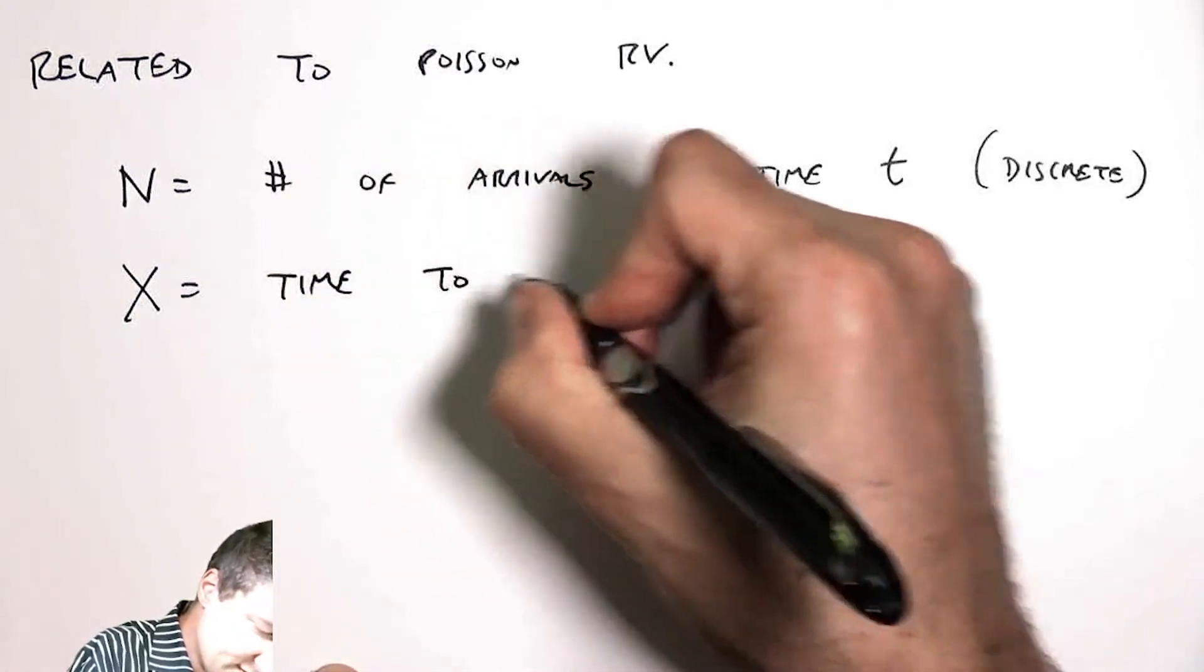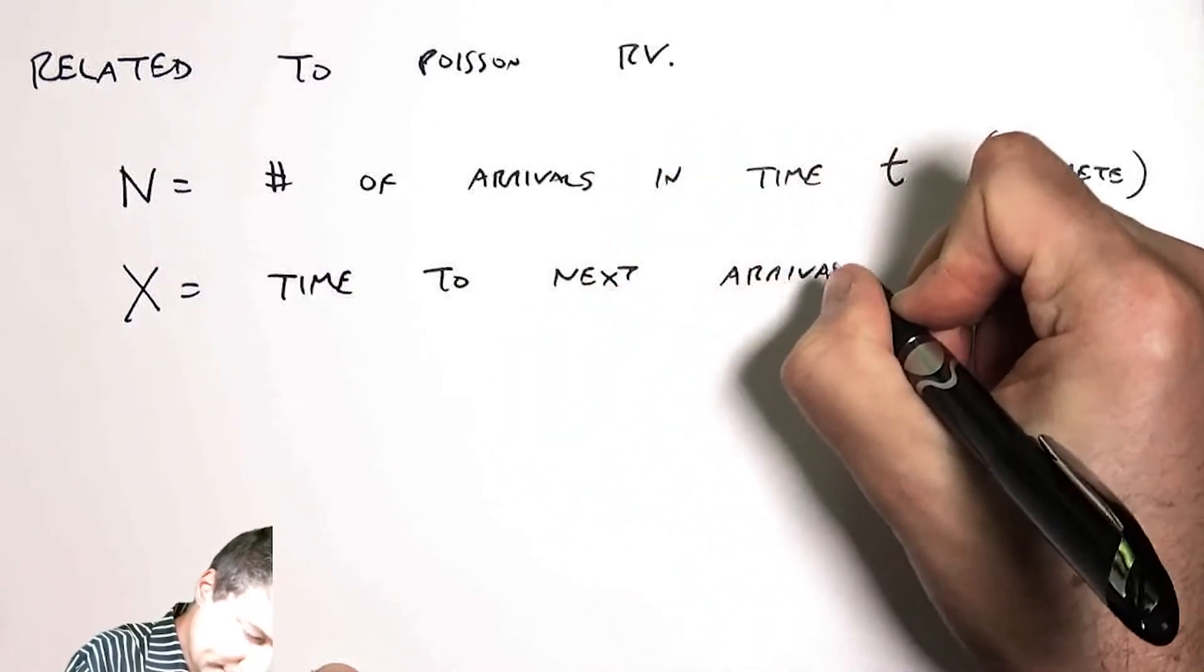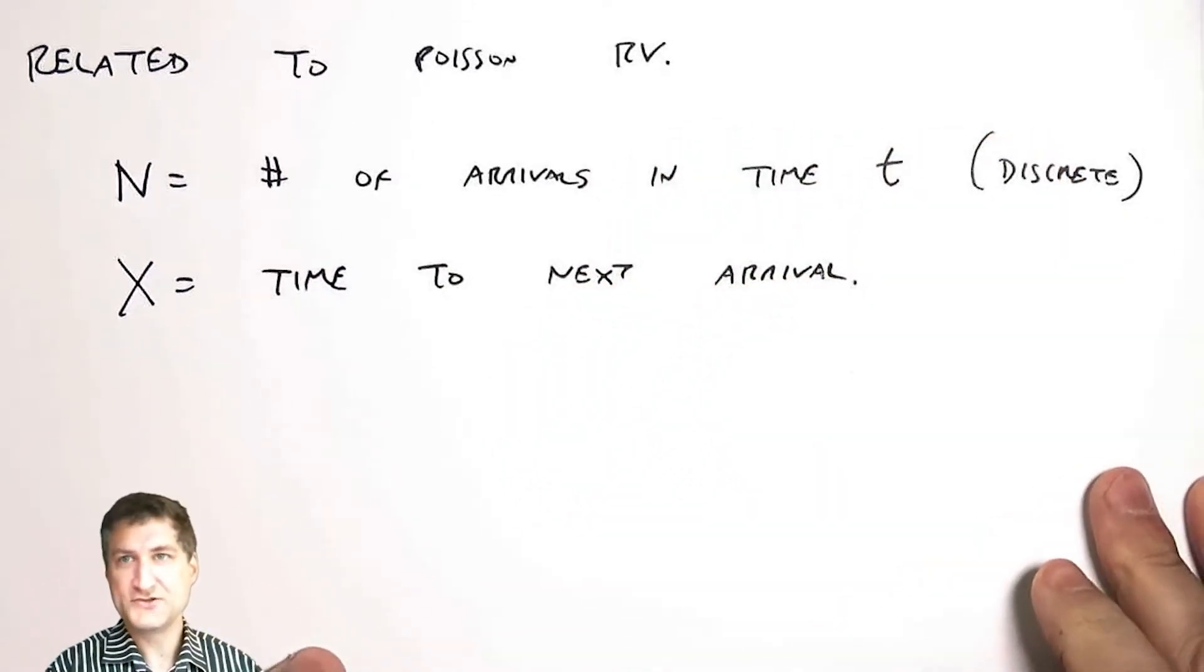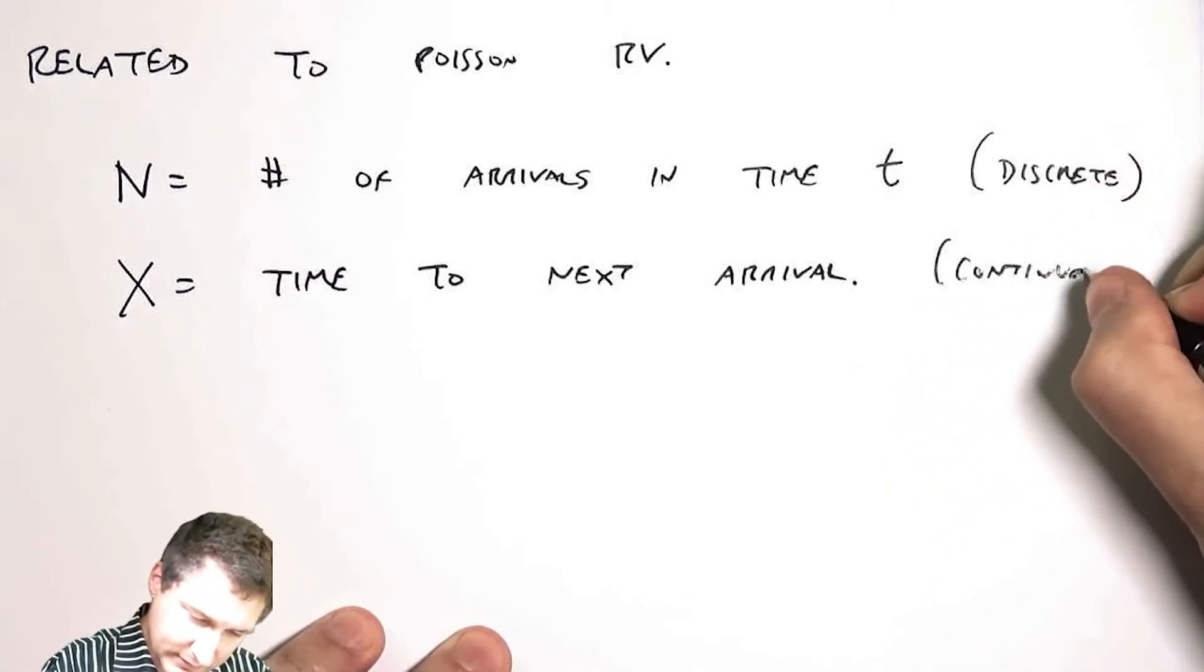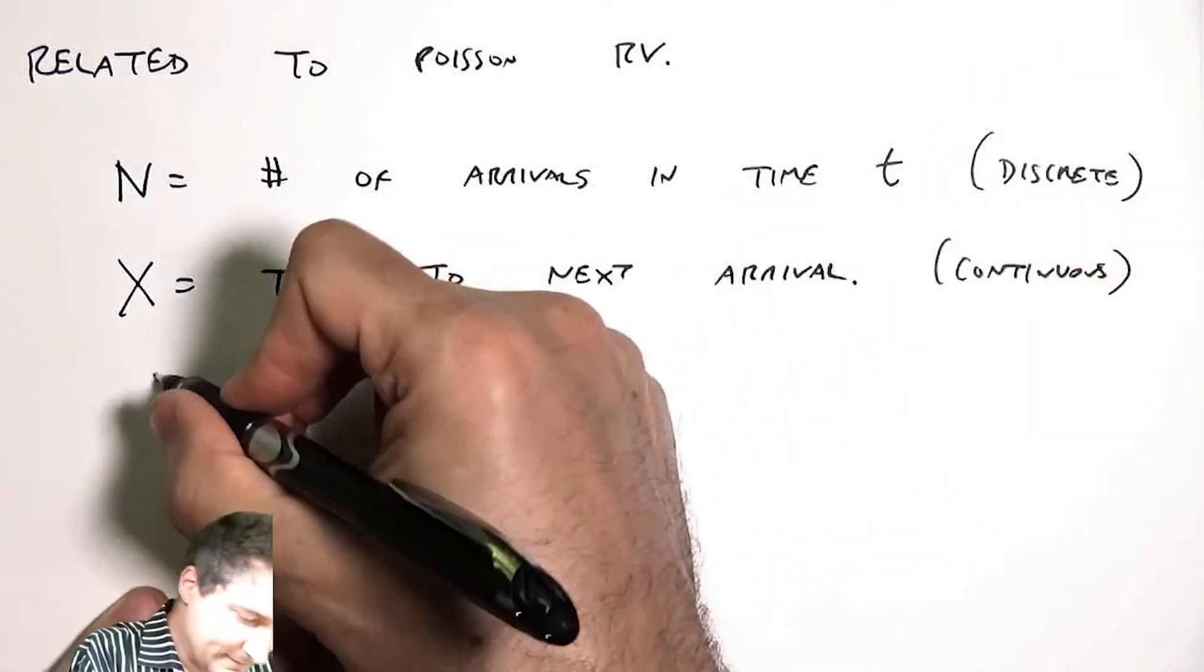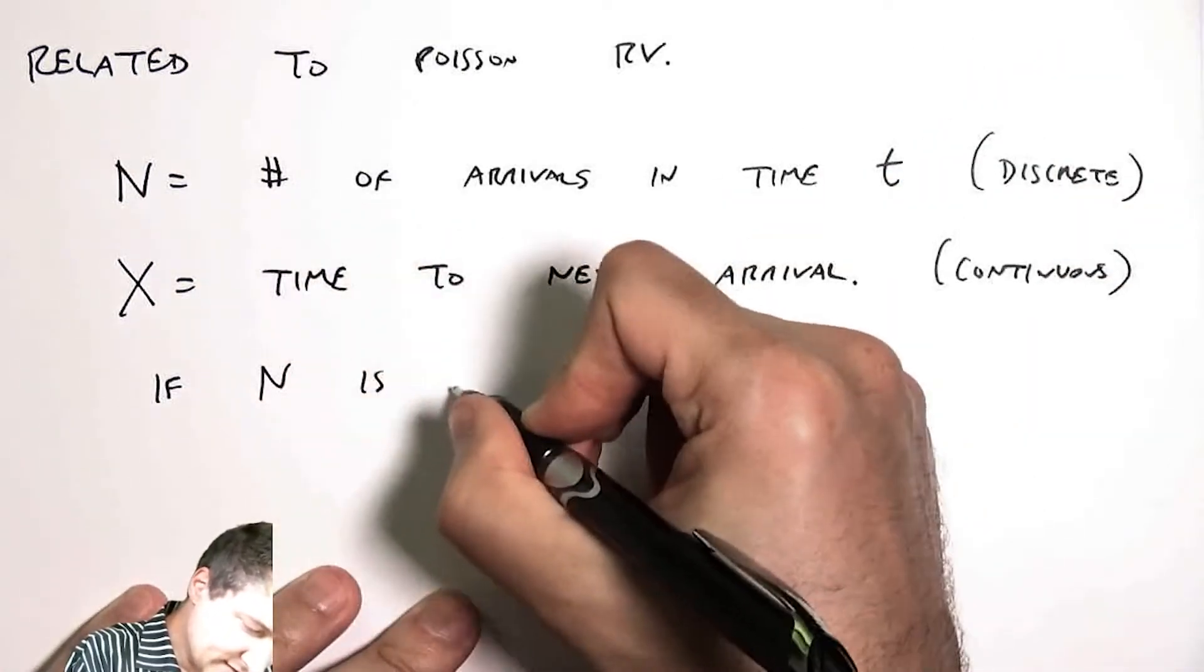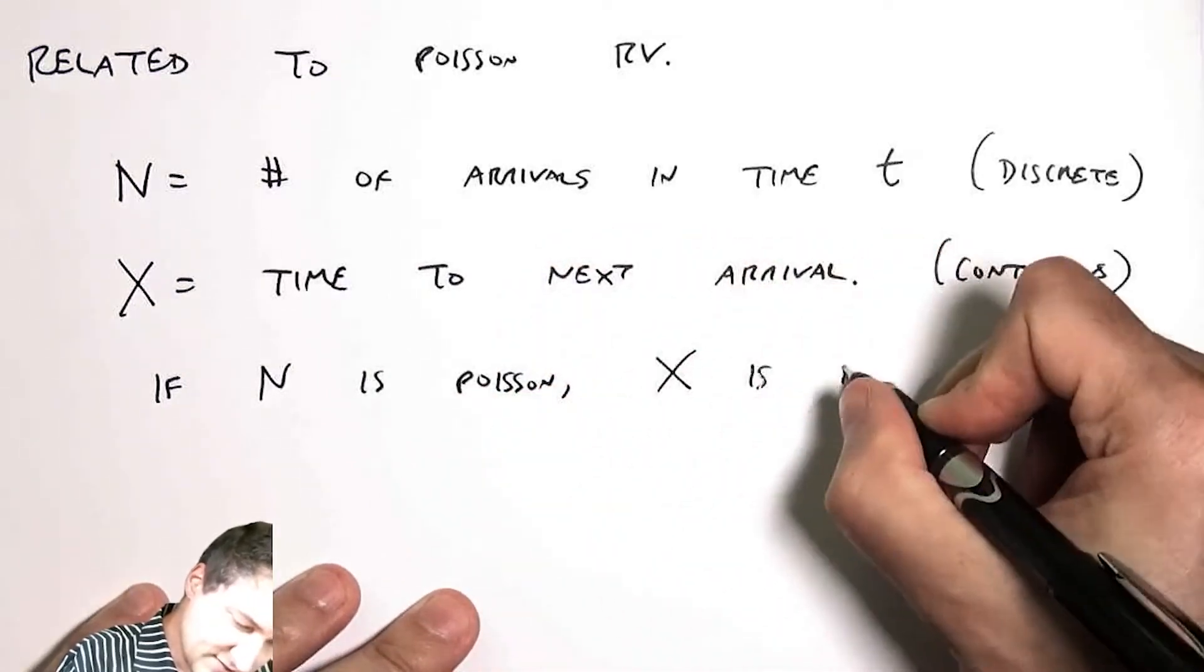Or I could think about a random variable X that is continuous, where X is basically the time it takes to the next arrival. This is a continuous random variable.